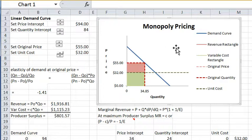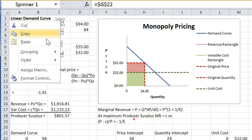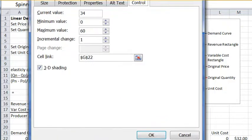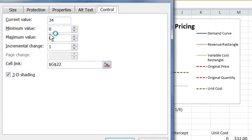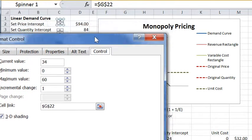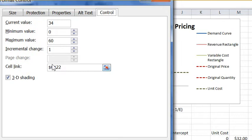Now the other thing we can look at is these buttons. Let's right-click on the button, and you can see from the format, the range goes from 0 to 60. The current value is 34. And where is the 34 going? It's going into cell G22.